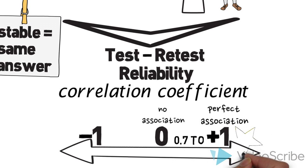An item with good reliability will have a correlation coefficient between 0.7 and 1.0. You don't want to get a negative value when you're measuring reliability.